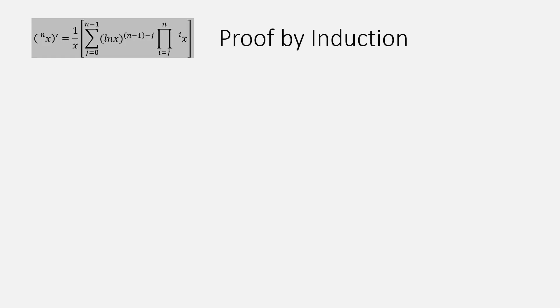To prove by induction, we start with the base case. Let n equal 1. Then 1 minus 1 in the upper limit of the sum is 0. And the index of summation j is 0.